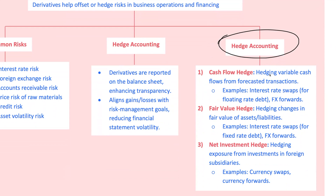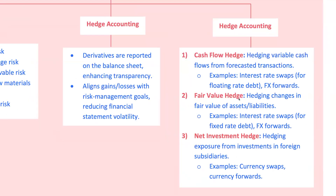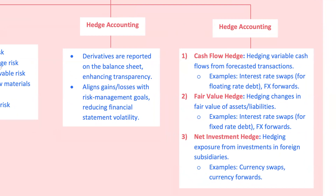There are three main types of hedges. A cash flow hedge is used to guard against fluctuating future cash flows. A fair value hedge protects against changes in the value of assets or liabilities. And a net investment hedge shields against currency risk in foreign investments — like using a currency swap to stabilize returns from a subsidiary in another country.